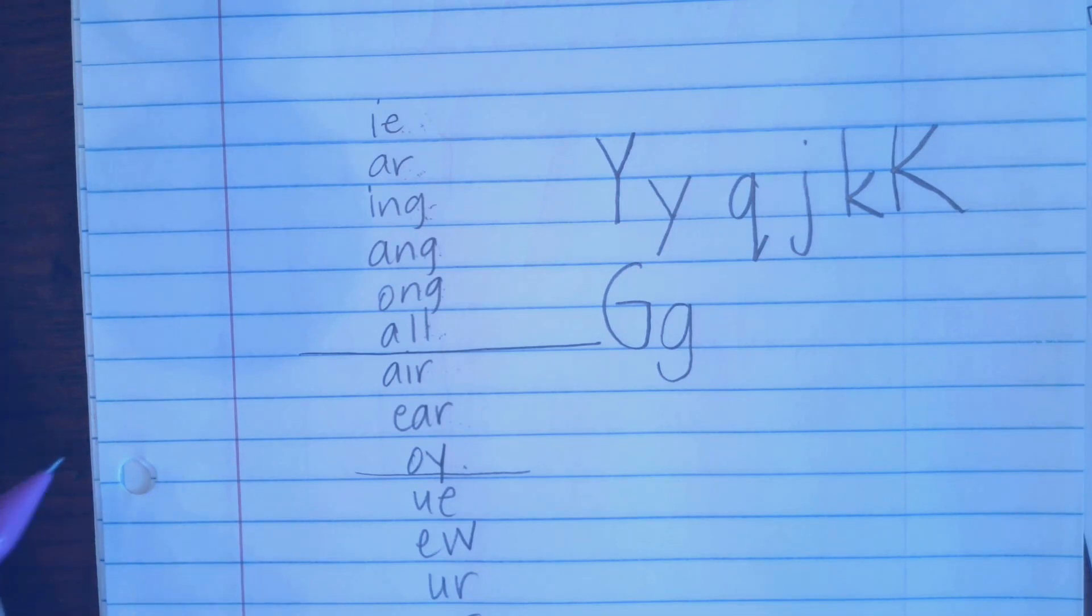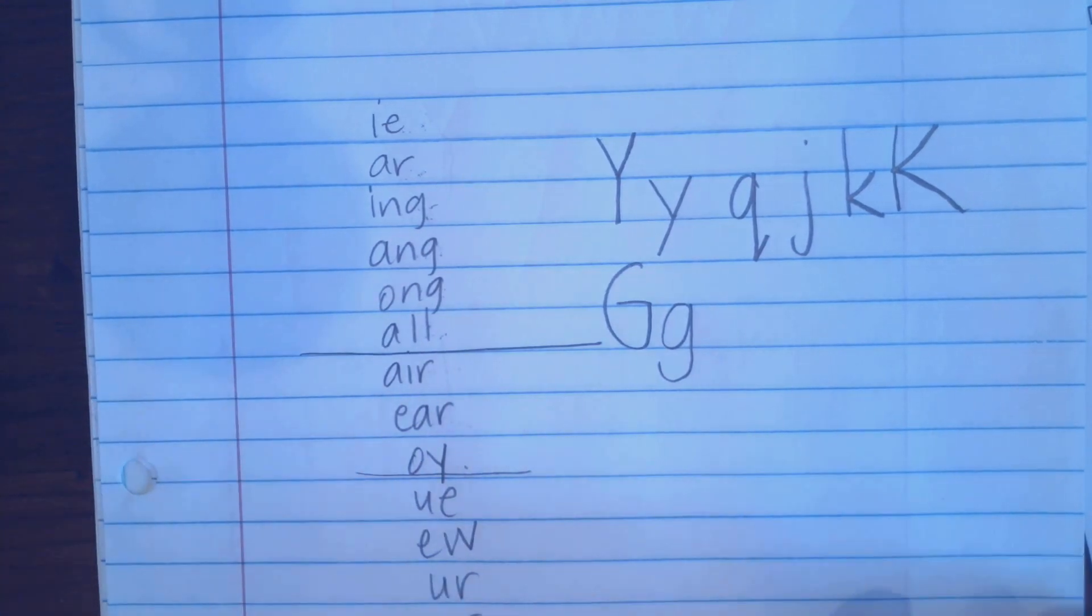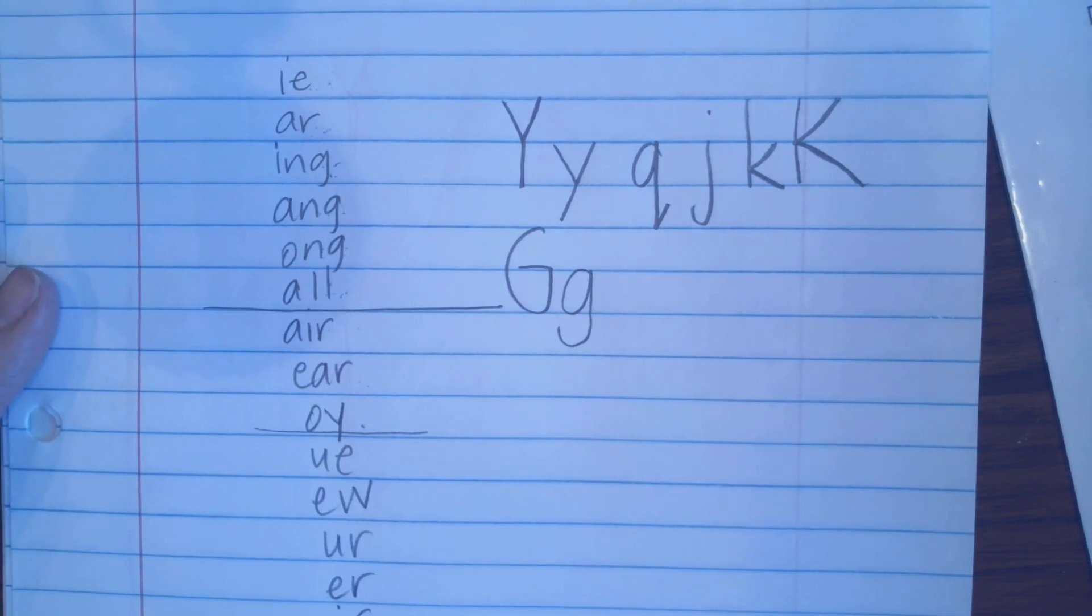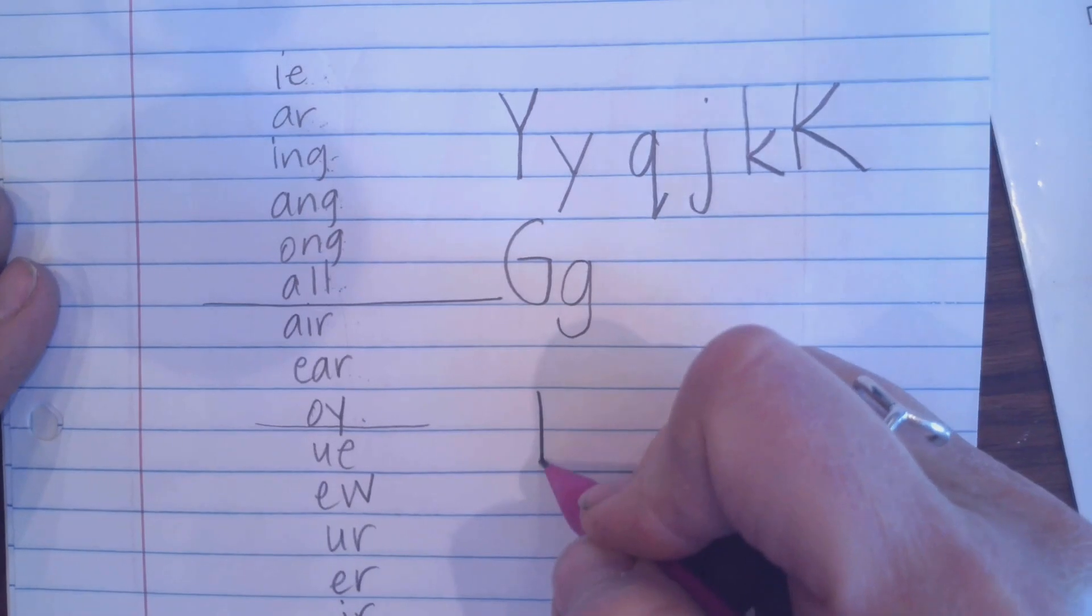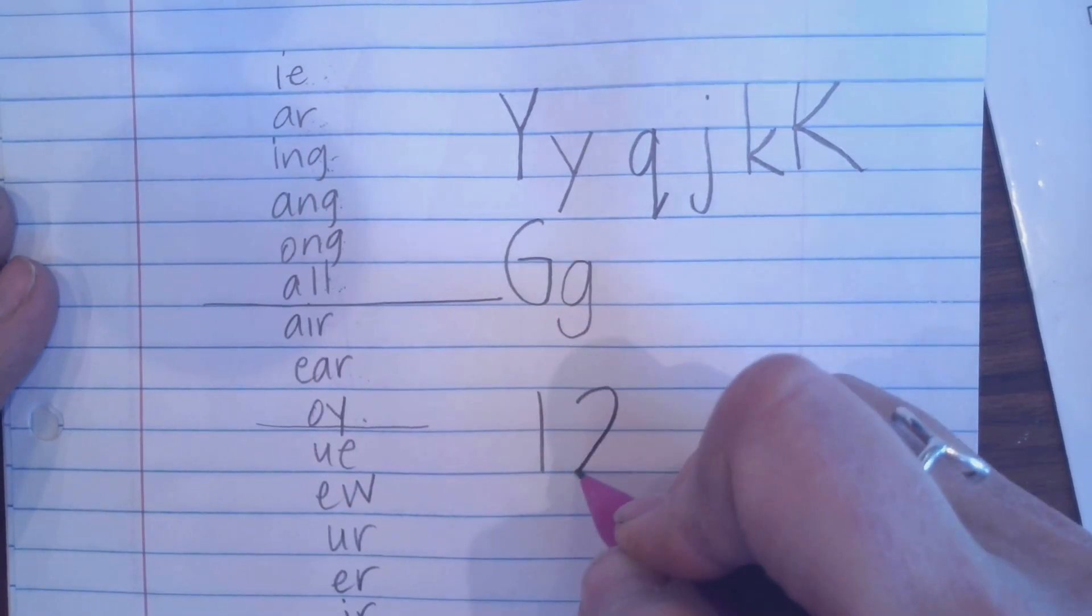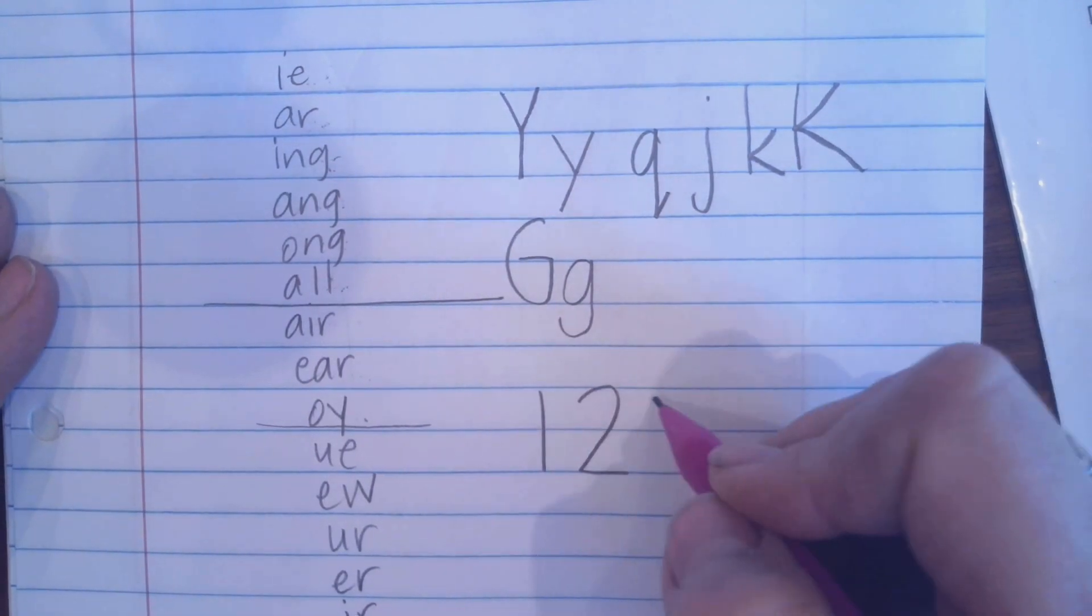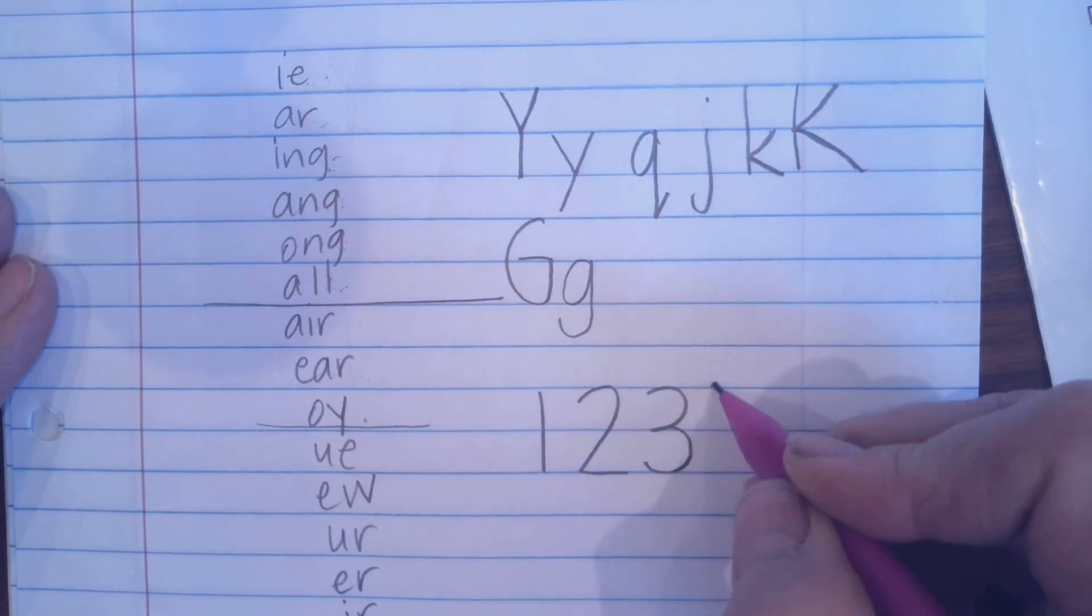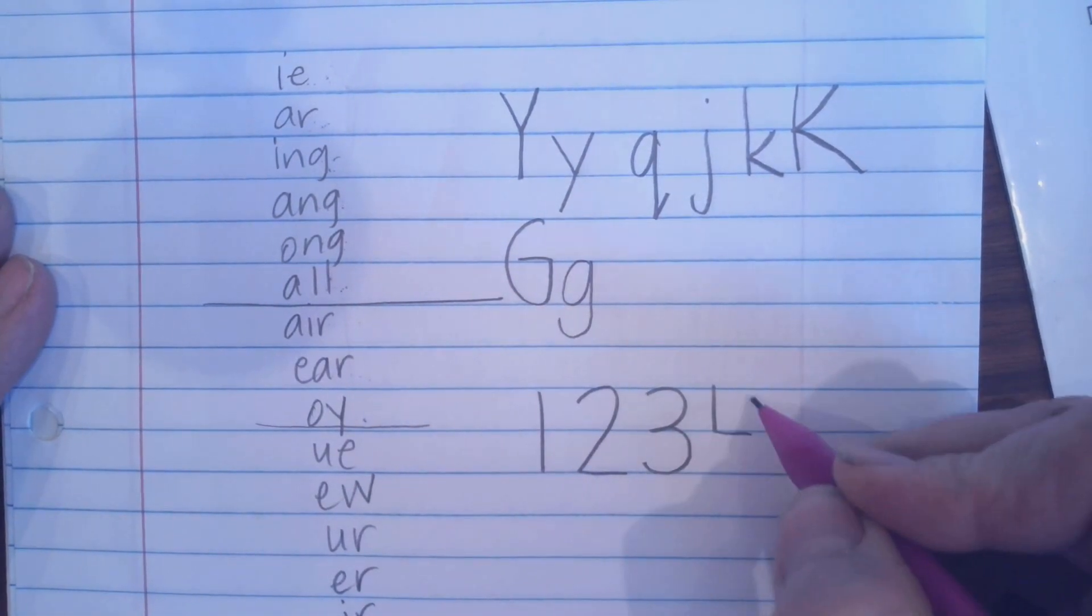One thing we have not done are our numbers. So I'm going to ask you to do your numbers right now. And then don't look at me. I'm just going to write the numbers like this. You can start in on your numbers, but don't look at mine. And I'll just show you how to make these ones.